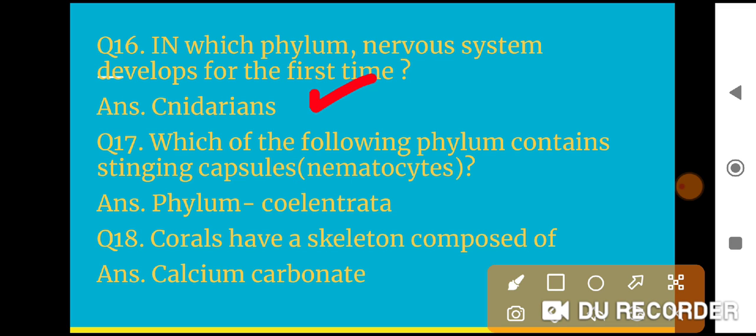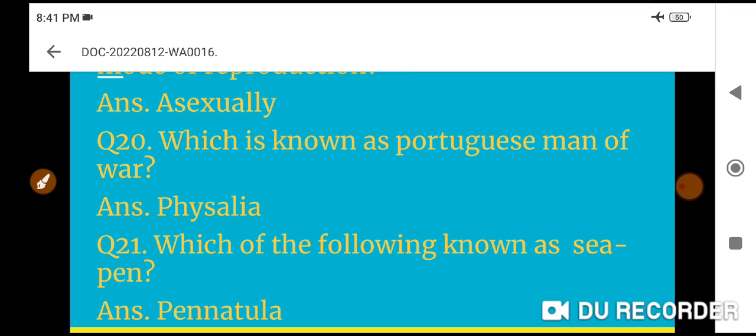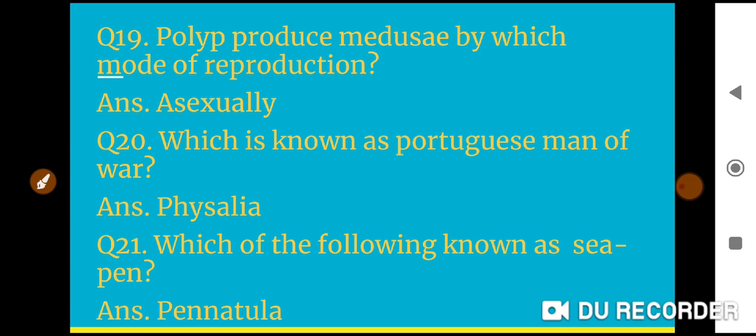Question 18: Corals have a skeleton composed of calcium carbonate. I am going to tell you that in this chapter, the main thing is the examples. You need to know examples in this chapter.